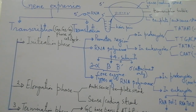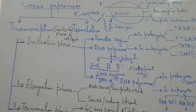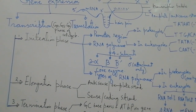Transcription — the word means 'written copy' — and it occurs during sub-phases of the cell cycle called G0, G1, and G2, which are the phases that appear during interphase. The process of transcription is continuous, but for convenience we can divide it into three phases: initiation phase, elongation phase, and termination phase.